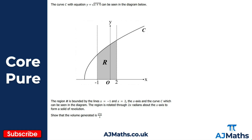There are two examples in this video that we're going to work through together. These examples and solutions are quite lengthy, so two examples should be plenty. Let's get started. We've got curve C with its equation, shown in the diagram. We've got shaded region R, bounded by the lines x = -1, x = 2, the x-axis, and curve C. This region R is rotated through 2π radians — 360 degrees — about the x-axis, forming a solid of revolution. We're asked to show that the volume V equals 27π/2.